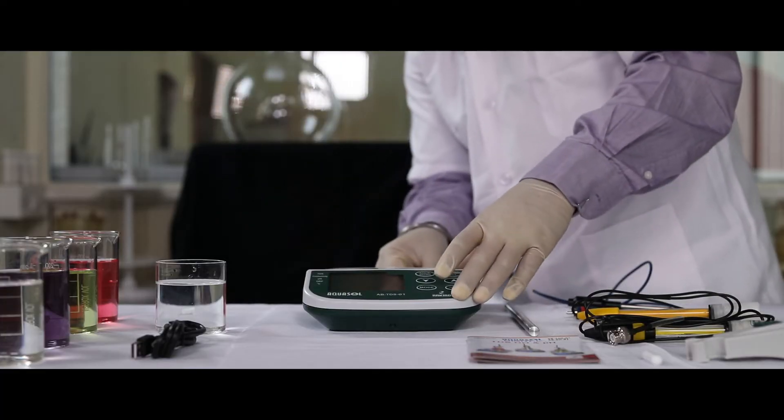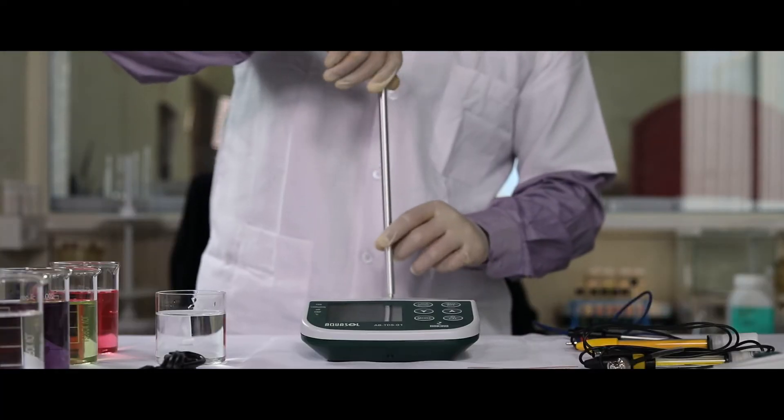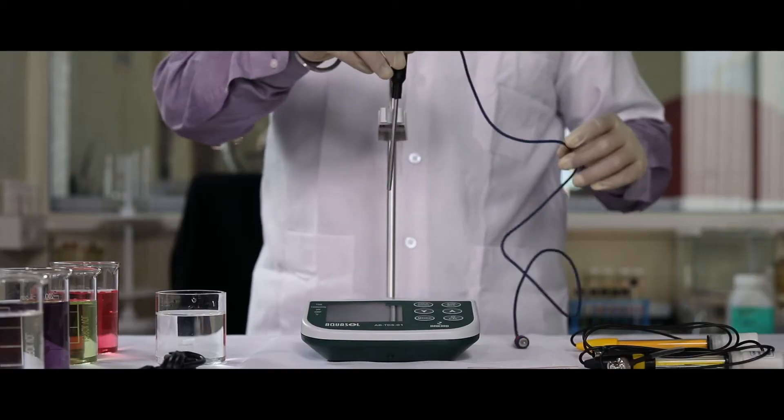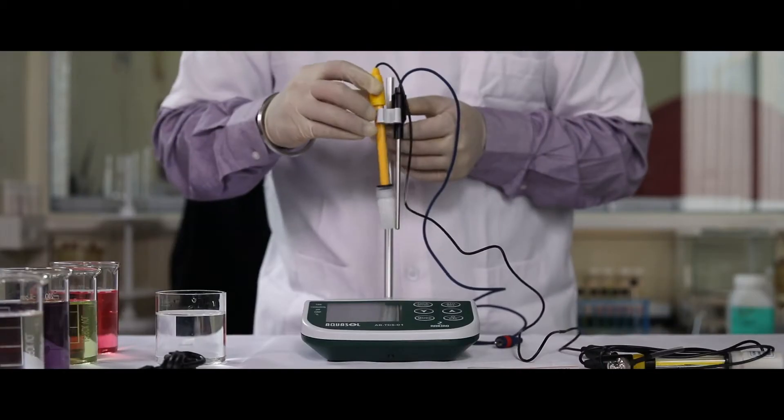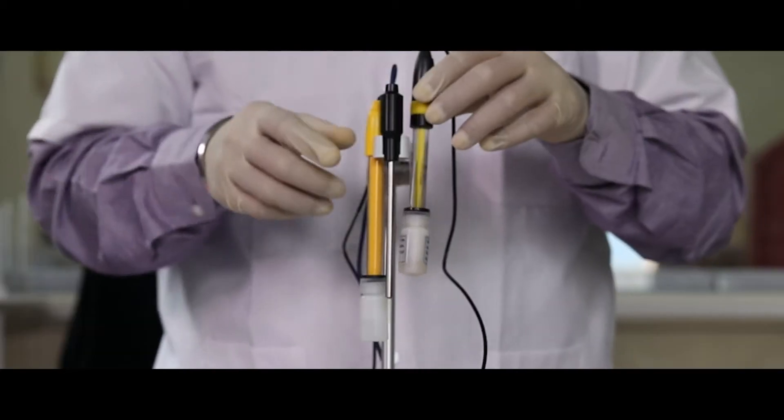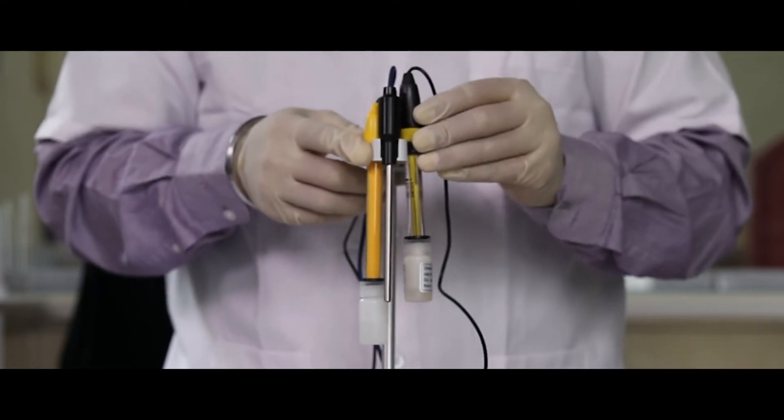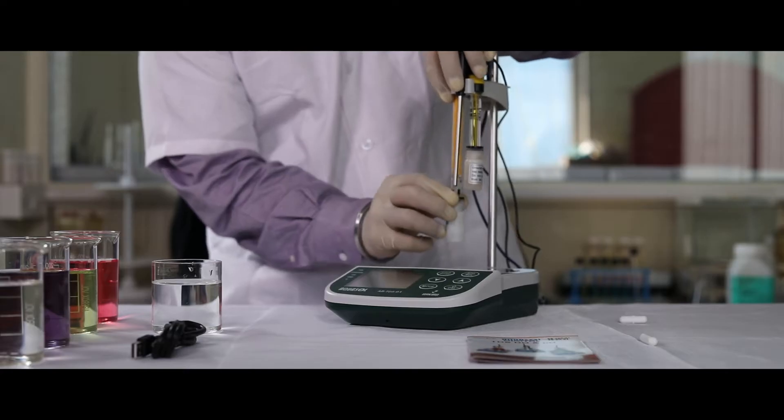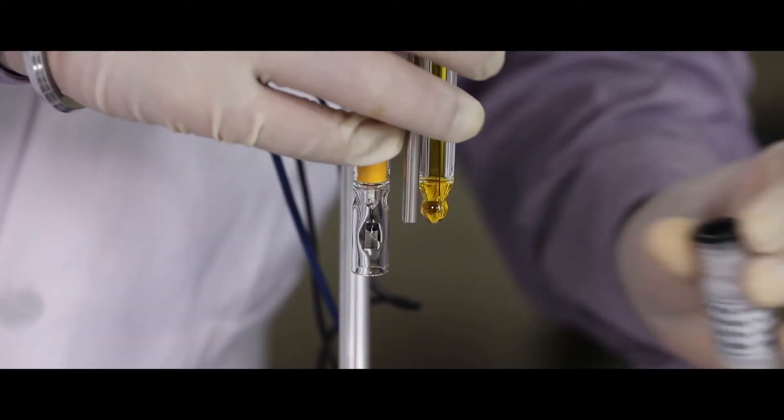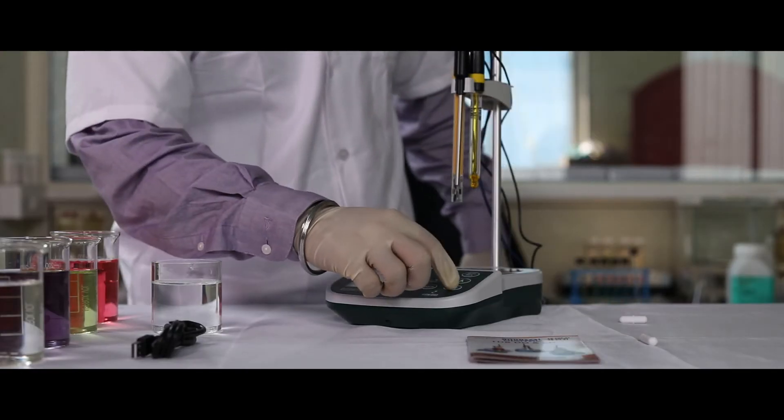Once we connect the power supply, screw the metal stand. Connect all the probes to the stand given. Remove the electrode caps and switch on the meter.